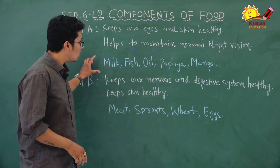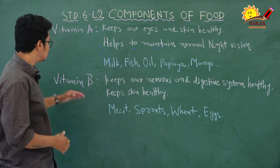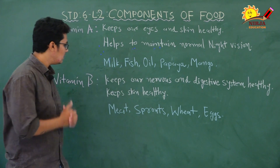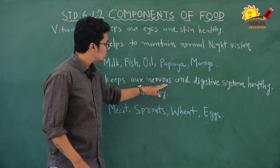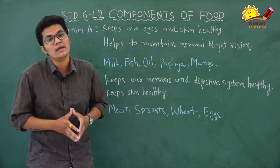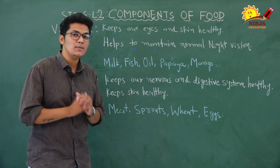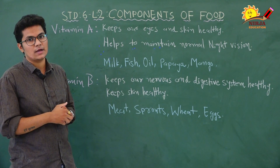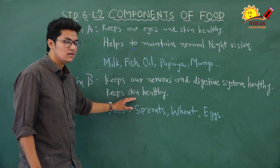We should consume foods that are sources of vitamin A. Now let's see vitamin B. Vitamin B keeps our nervous system and digestive system healthy, and also keeps skin healthy. It is essential for proper digestion of food and for maintaining healthy skin.